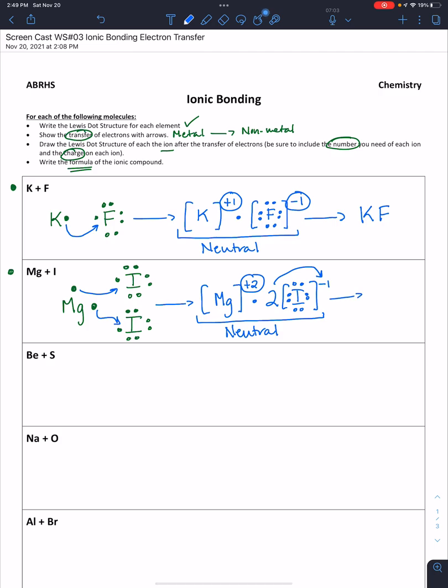We then finish up by drawing the formula for this compound. We have one magnesium atom associated with two iodine atoms, so we get MgI2.